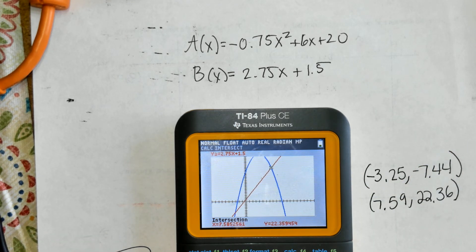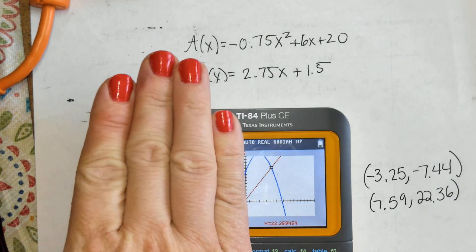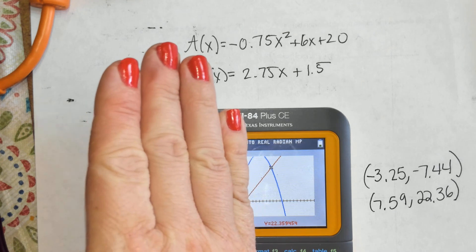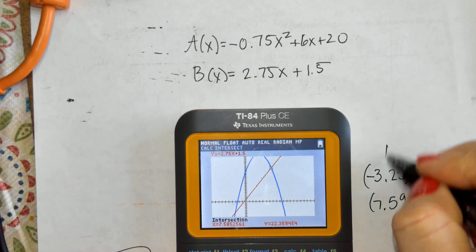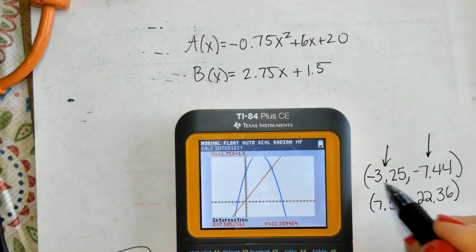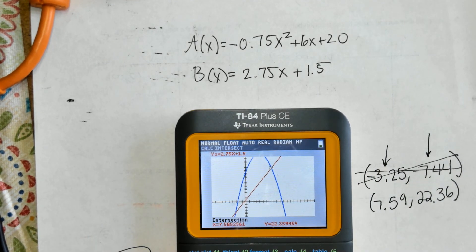And part B says, when does the price of the stock over the same 10-month period equal one another? Well, if this is the number of months, we can't have negative months, which means really I can't consider this. We can't have negative months and they're only talking about the first 10 months. So this answer, which represents months and the price of stocks, cannot be considered. It's an extraneous solution.